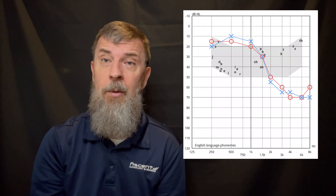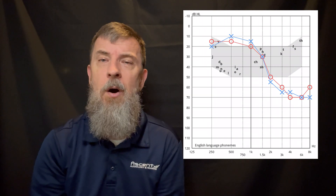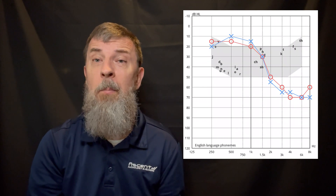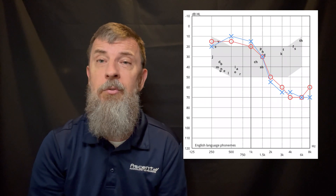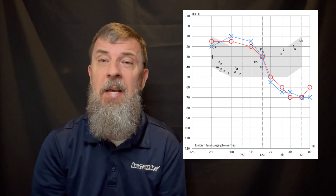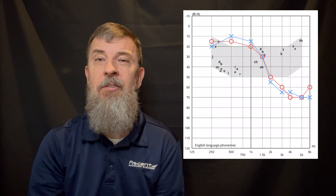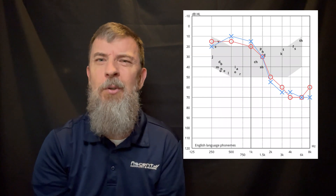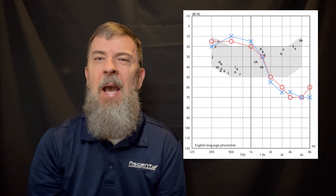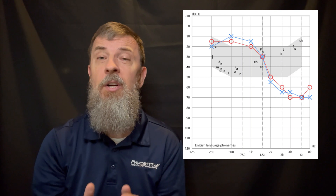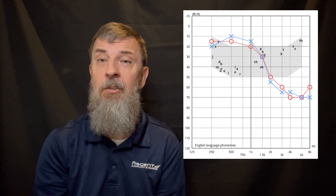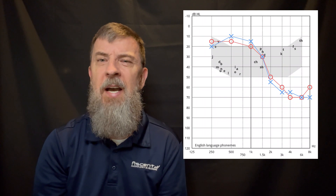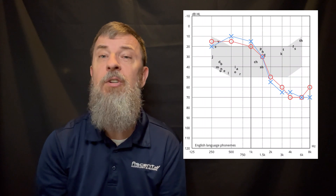In simpler terms, when we plot your hearing loss on the audiogram, any sound that falls above your X's and O's are sounds that you cannot hear. The speech banana — as it is referred to — is the little shaded box that sort of looks like a banana, and what it represents is average conversational speech in the English language. That helps us get an idea of how much speech information you are missing out on, and it helps you understand that as well.